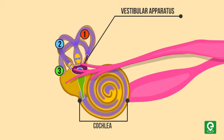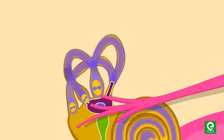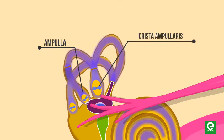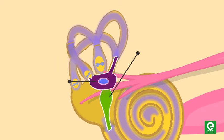The base of canals is swollen and is called ampulla, which contains a projecting ridge called crista ampullaris. The saccule and utricle contain a projecting ridge called macula.